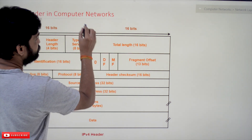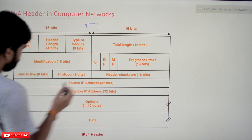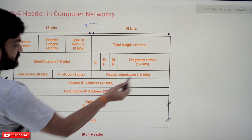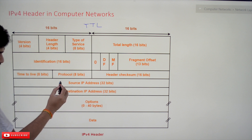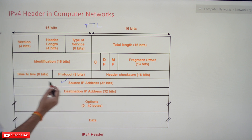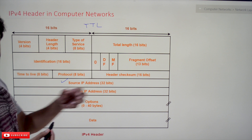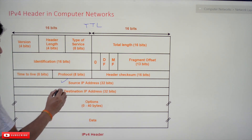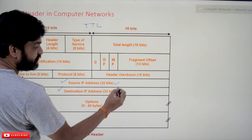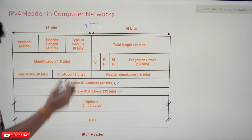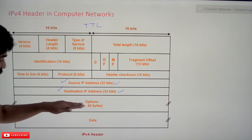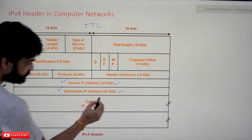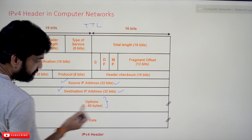Next is More Fragments, then Fragment Offset, then Time to Live — also called TTL. After TTL is Protocol, and then Header Checksum. The next fields are Source IP Address and Destination IP Address, both of size 32 bits each. We've discussed IP addresses in our previous videos — IP addresses are 32 bits in length.